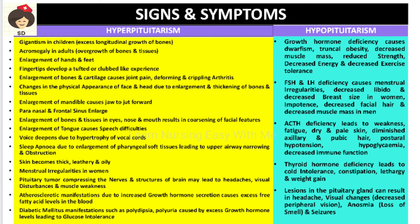Changes in facial appearance occur due to thickening and enlargement of bones and tissues of the face; the mandible jets forward. Paranasal and frontal sinuses enlarge, and bones around the eyes, nose, and mouth enlarge, producing coarse facial features. The tongue becomes enlarged, causing speech difficulty. The voice becomes coarse due to hypertrophy of the vocal cords. Sleep apnea occurs because pharyngeal tissues around the throat are enlarged, causing obstruction. Skin becomes thick, leathery, and oily, and menstrual irregularities occur in women.